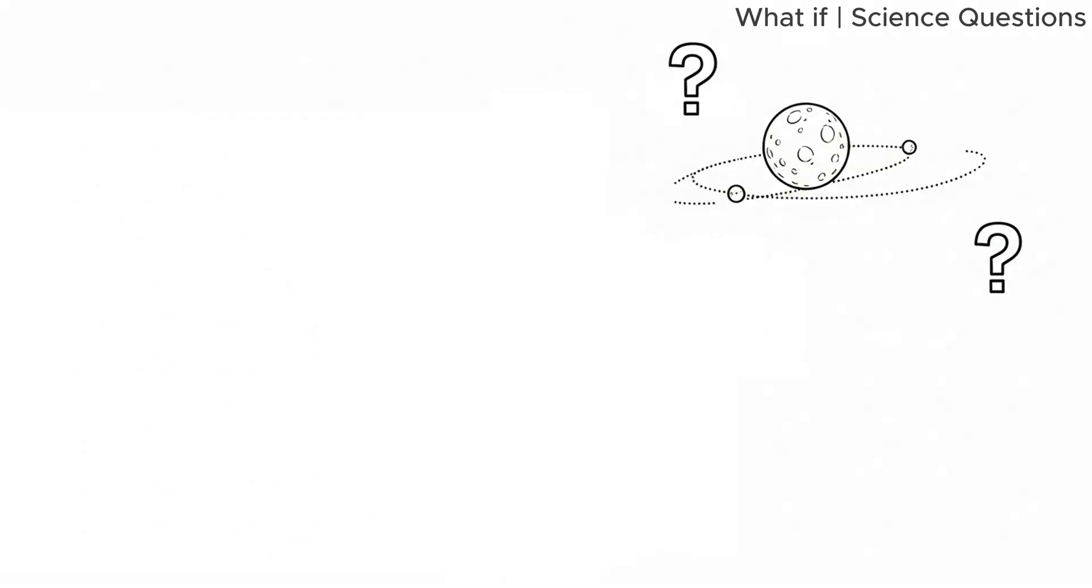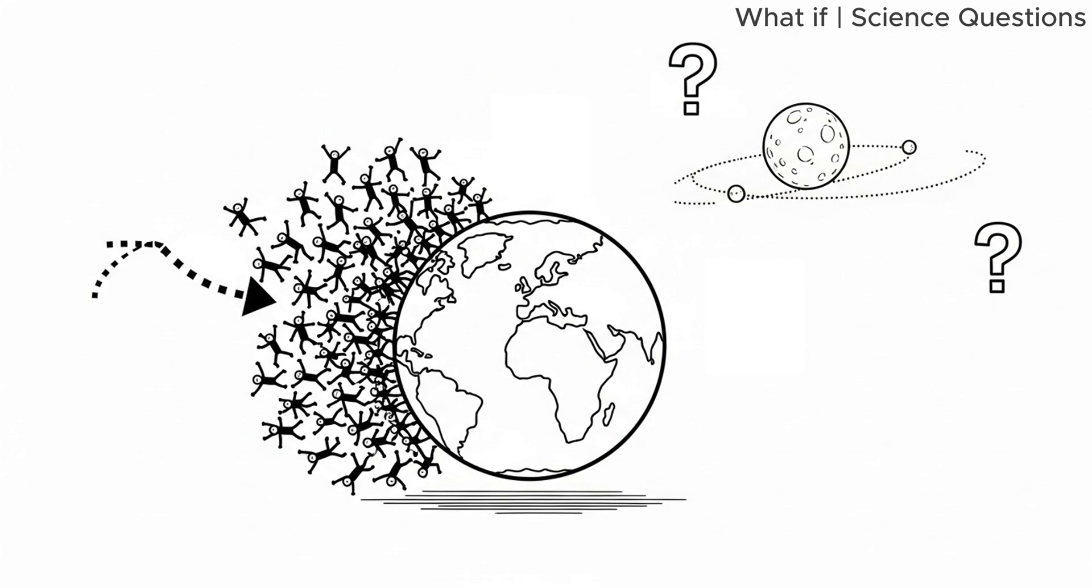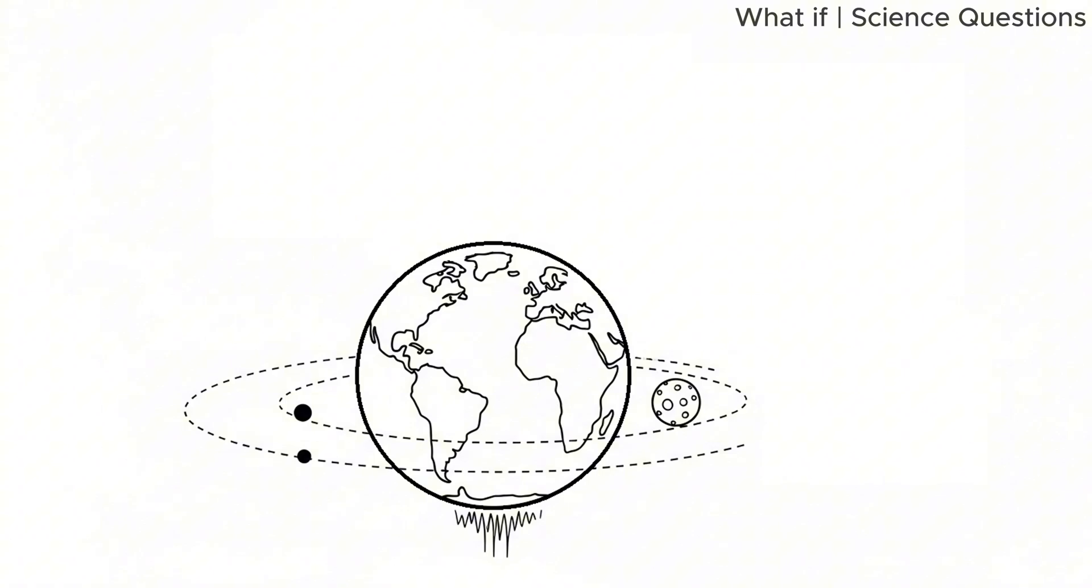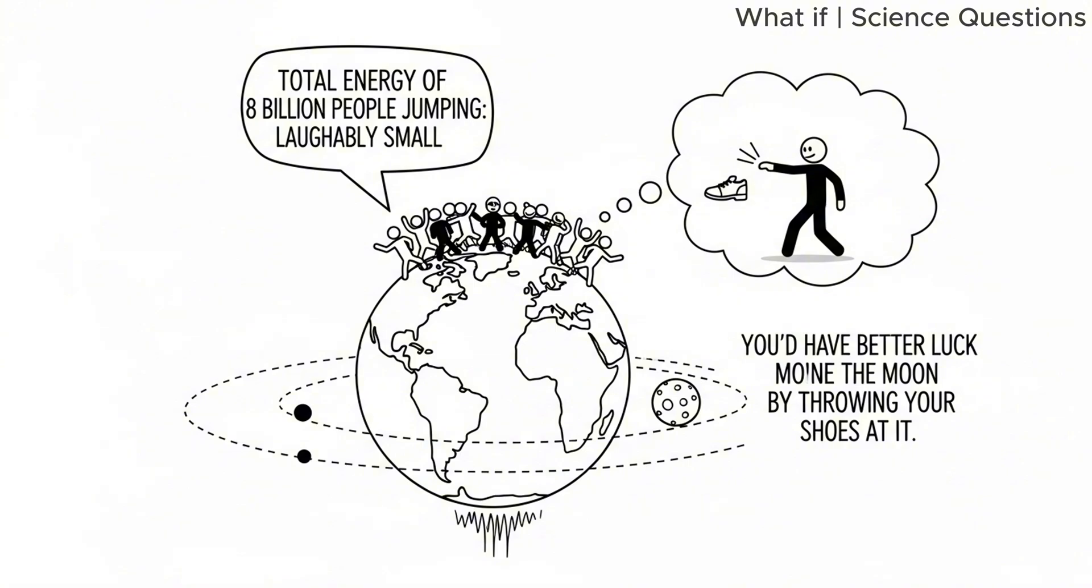And then, of course, there's the question of the moon. Some people wonder, could a mass-synchronized jump change the Earth's orbit or its relationship with the moon? Absolutely not. The Earth-Moon system is governed by immense gravitational forces. The total energy of eight billion people jumping is laughably small in comparison. You'd have better luck moving the moon by throwing your shoes at it.